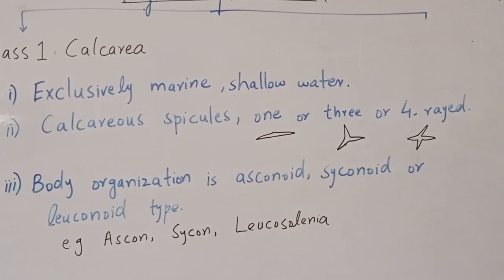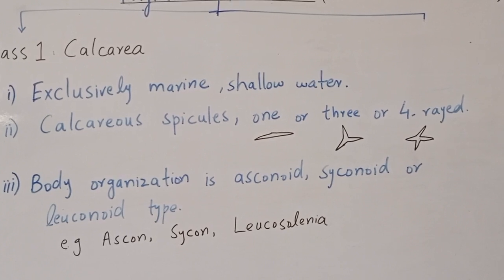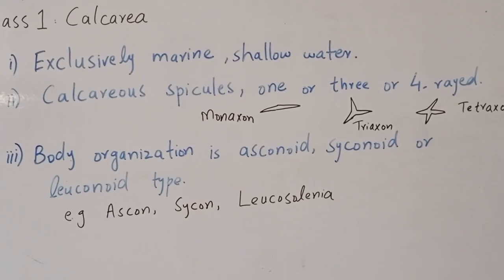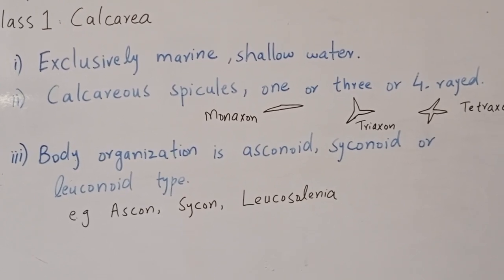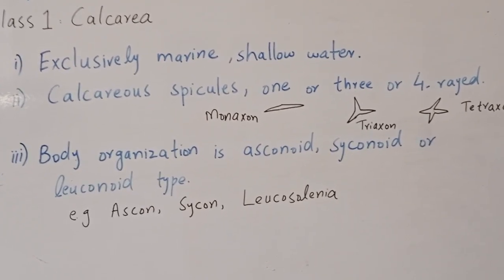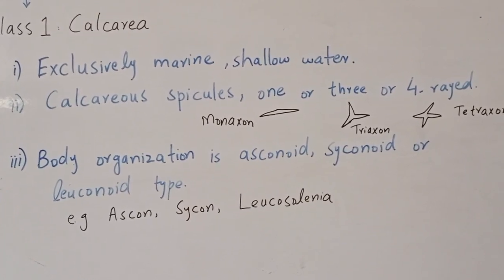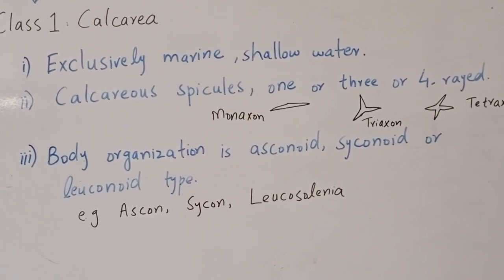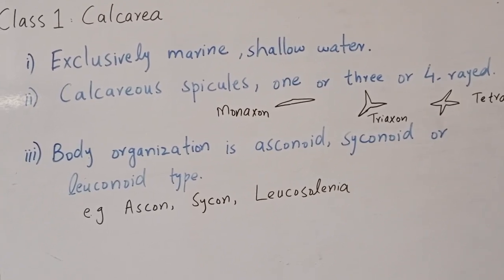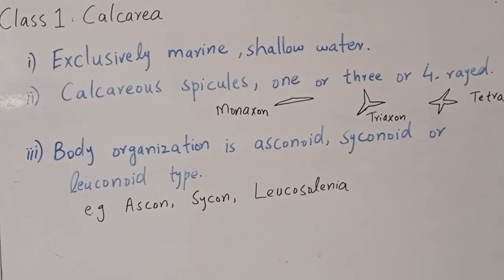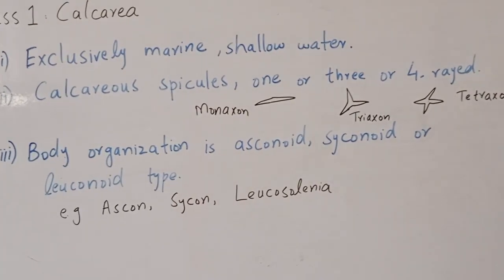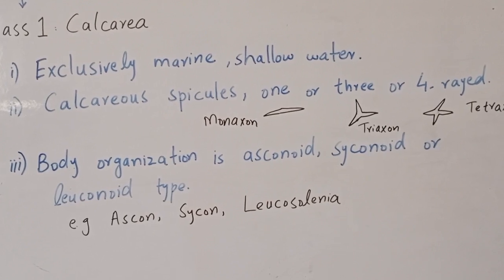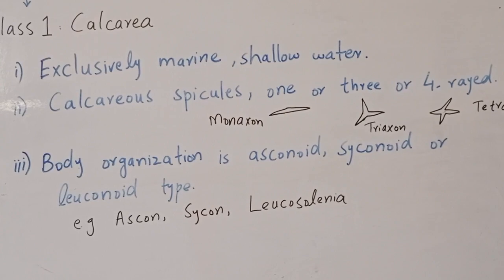Calcarea spicules can be triaxon if they have three rays, or tetraxon if they have four rays. Regarding body organization, Calcarea sponges have either ascon, sycon, or leucon type of canal system. Examples include Ascon, Sycon, and Leucosolenia.